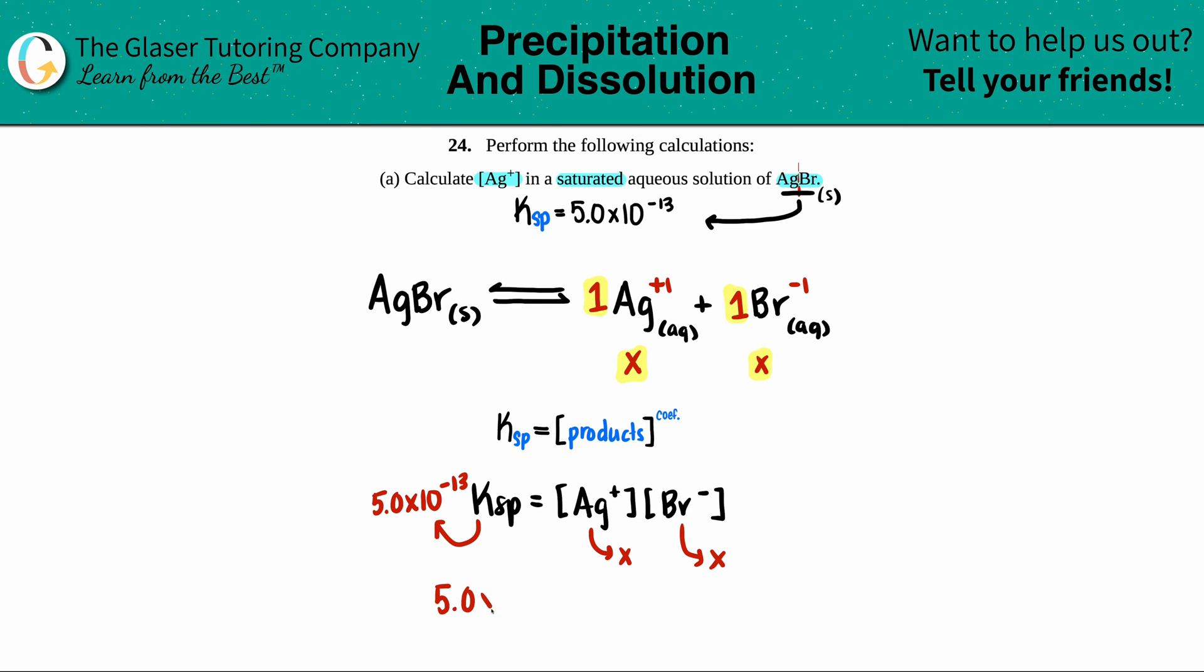So 5.0 × 10^-13 equals, we have basically X times X, but X times X is just X². So I can just say that. And then just solve for X. I could take the square root of both sides and then we'll find out what X is.